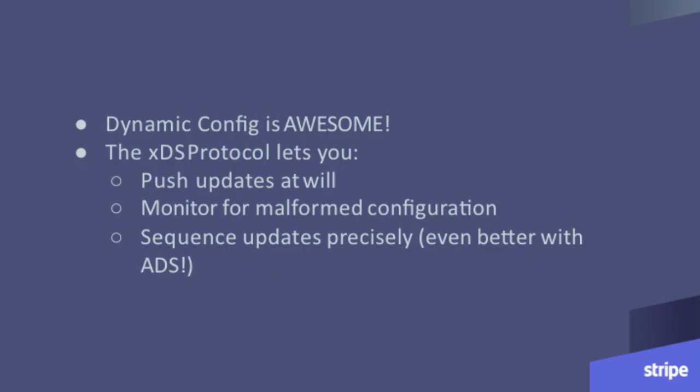In summary, dynamic configuration is really awesome. At Stripe we're excited about it because it lets us change Envoy's configuration across the fleet without modifying a config file everywhere or writing a new template. The XDS protocol lets you push updates at will by sending a new discovery response on the stream. It lets you monitor for malformed or unprocessable configuration and page yourself if you've misconfigured the management server. And finally, you can sequence updates precisely, guaranteeing configuration arrives in the order you expect — and this is even easier with the Aggregated Discovery Service.